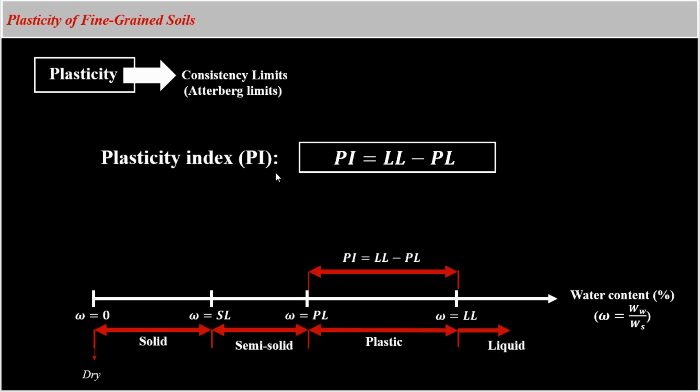Plasticity index is defined as the difference between liquid limit and plastic limit. PI equals zero means that the plastic and liquid limits of a soil are the same, or the soil is not plastic. In another word, by increasing its water content, the soil phase changes from semi-solid directly to liquid.